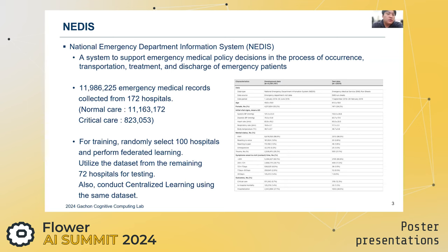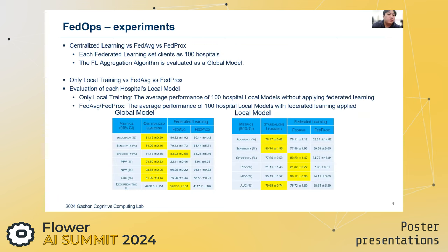The dataset we used is the MIMIC dataset, which is emergency room patient information collected from 172 hospitals. 100 hospitals randomly selected as clients were set as training, and the remaining 72 hospitals were set as tests. We conducted an experiment comparing centralized learning and federated learning, as well as comparing local training versus federated learning. As a result, centralized learning shows the highest performance, and an important indicator in the SAMD model is AUC, where over 80% is considered a good model — but federated learning showed performance below 80%.